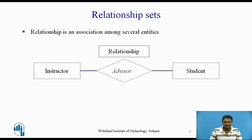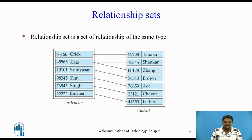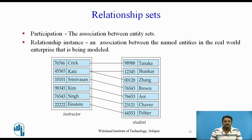A relationship is an association among several entities. For example, we can define a relationship advisor that associates an instructor and a student. This relationship specifies that the instructor is an advisor for the student. A relationship set is a set of relationships of the same type. Consider two entity sets — instructor and student — and we define the relationship set advisor to denote the association between them. The association between entity sets is referred to as participation.